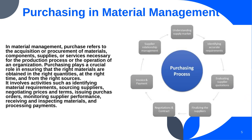Purchasing in material management is a pivotal function that involves the acquisition of materials, components and services necessary for production and operations. It encompasses activities such as identifying material requirements, sourcing suppliers, negotiating contracts, issuing purchase orders, and managing supplier relationships. Effective purchasing practices aim to secure quality materials at competitive prices while ensuring timely delivery to support production schedules.